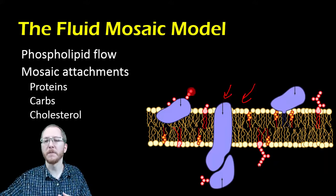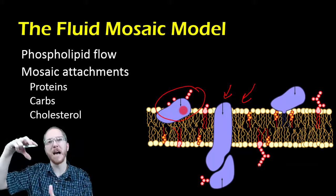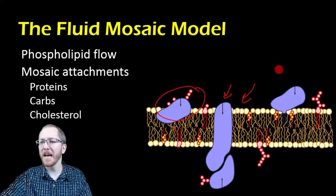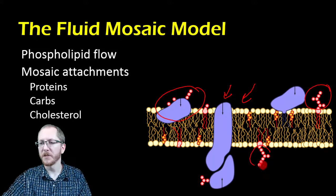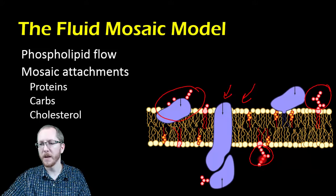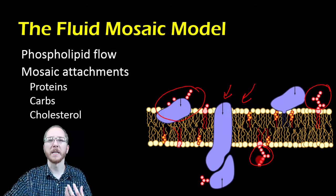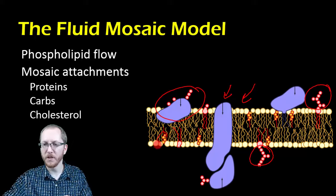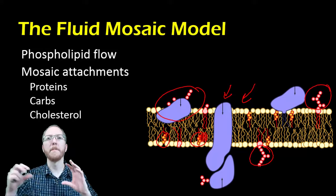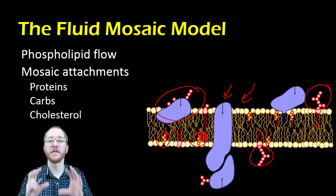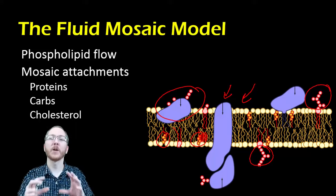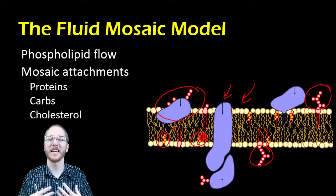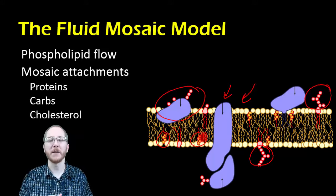Some proteins adhere to one side but don't go all the way through. You're also going to have carbohydrates — these red pieces sticking out are carbohydrates, a series of various monosaccharides, each red dot representing a monosaccharide, and they play a role for our cells. Then we have cholesterol, the yellow structures embedded in the membrane, which serve a vital function. Cholesterol gets a very bad rap, but it serves many important functions in our bodies, including membrane structure.